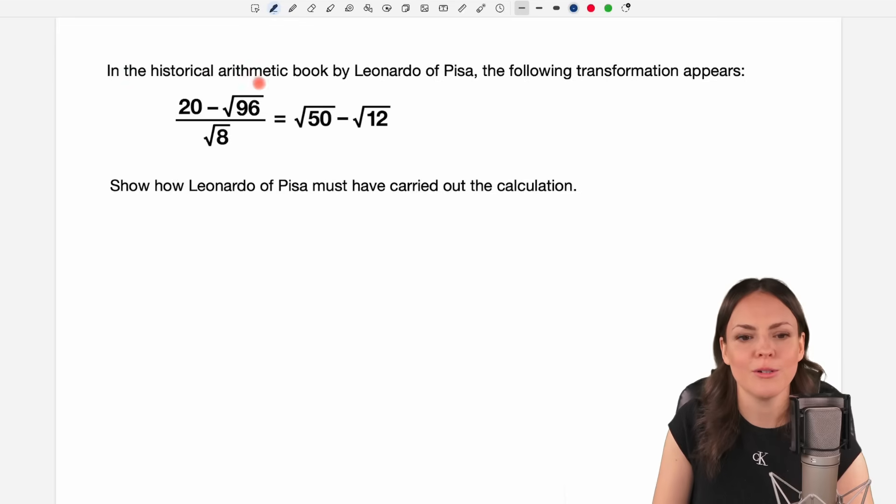In the historical arithmetic book by Leonardo of Pisa the following transformation appears, which looks like this. Show how Leonardo of Pisa must have carried out the calculation.